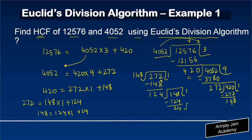Now I divide 124 by 24. Five times 24 gives 120, and the remainder is 4. So we write: 124 = 24 × 5 + 4.